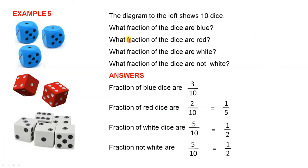Example 5. We've got 3 blue dice, 2 red dice, and 5 white dice. The diagram to the left shows 10 dice altogether. What fraction of the dice are blue? What fraction are red? What fraction are white? What fraction of the dice are not white?